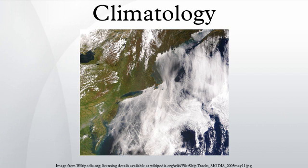Each cycle lasts approximately 30 to 60 days. The MJO is also known as the 30–60 day oscillation, 30–60 day wave, or the Intraseasonal Oscillation.